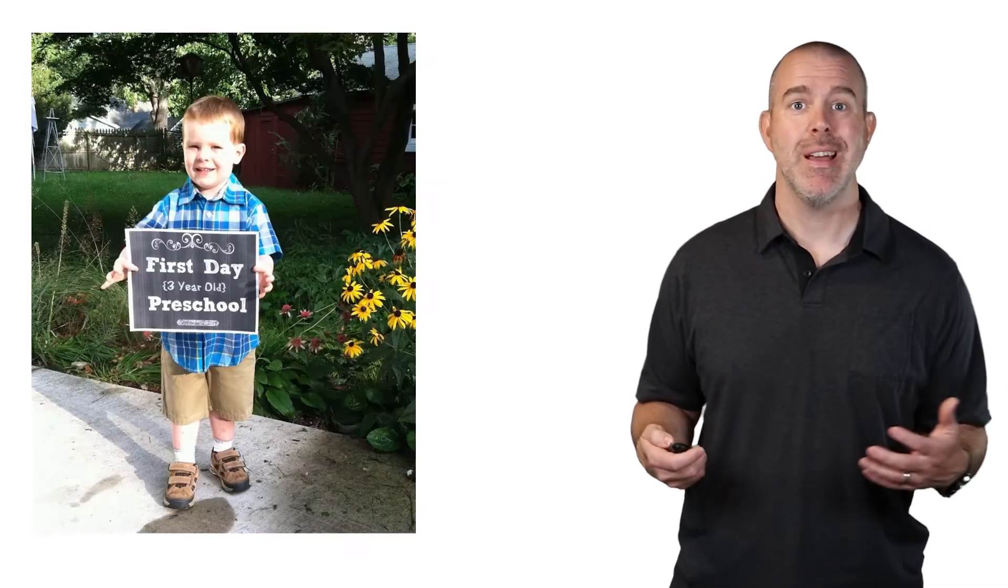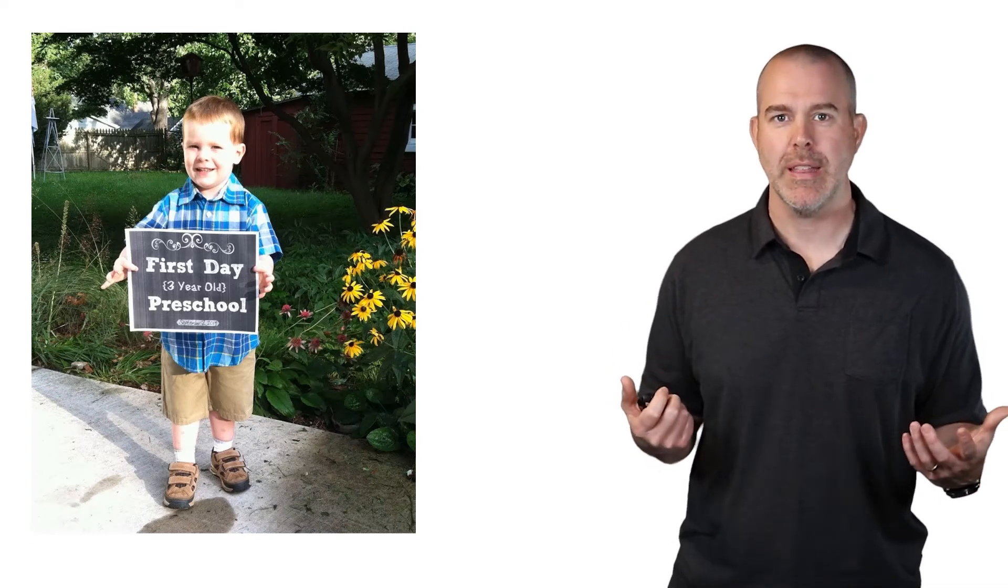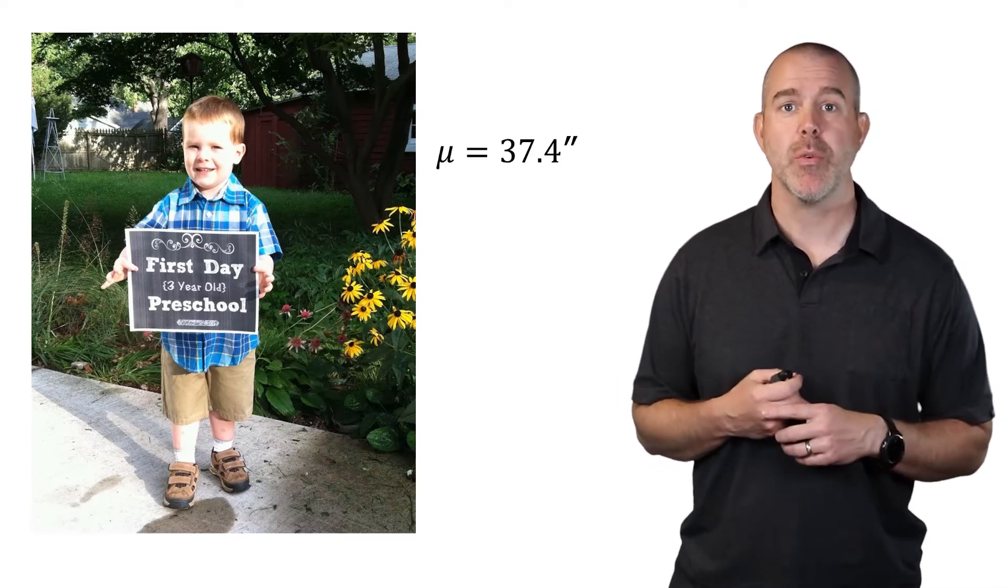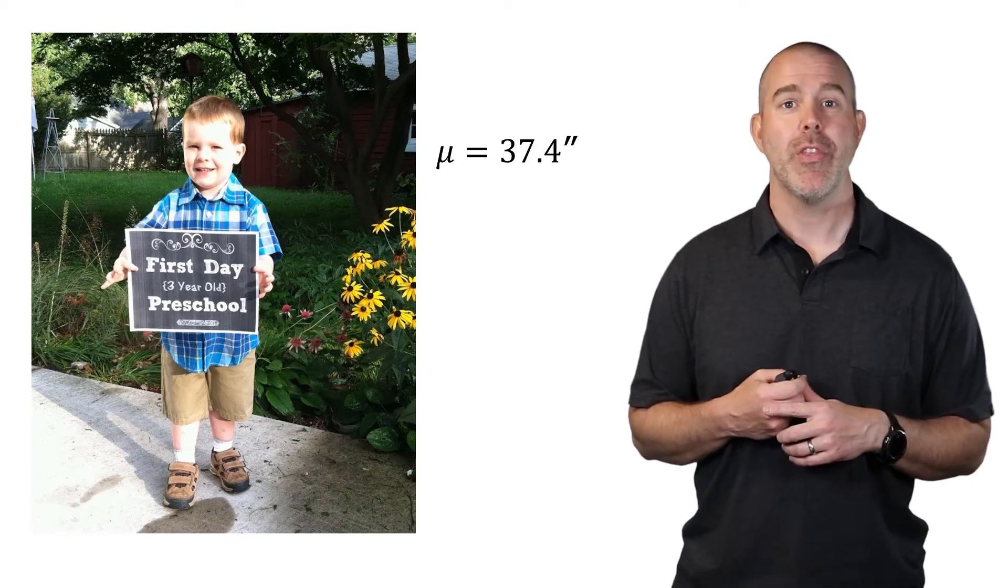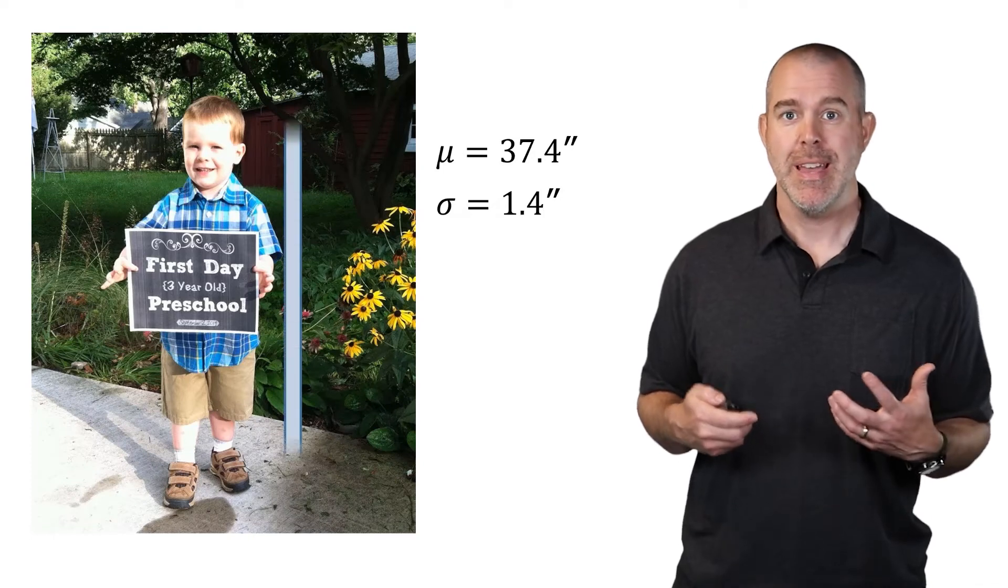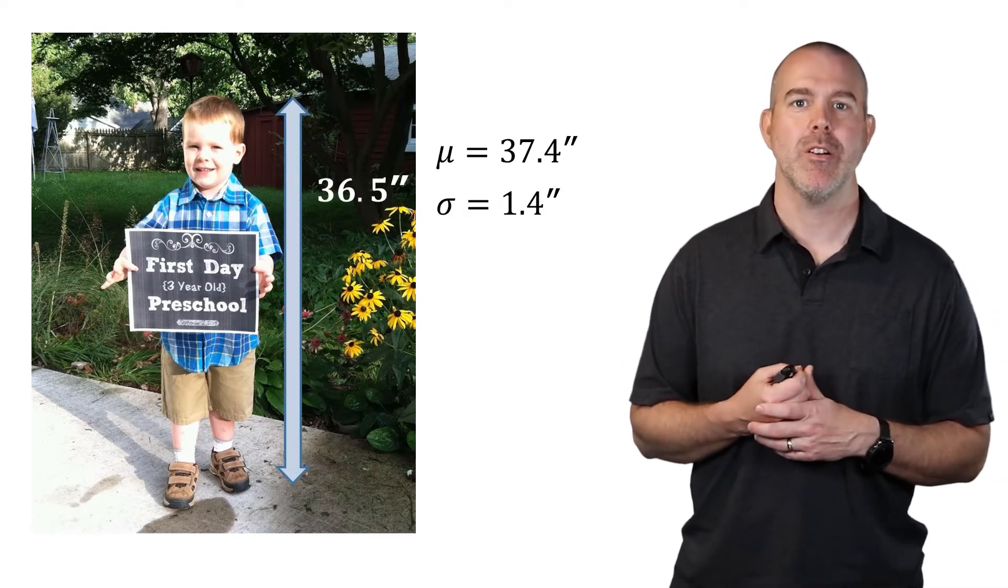Let's finish with an example. I've got a picture here of my son, my youngest son. He was three at this time. The mean height of three-year-old boys is about 37.4 inches with a standard deviation of 1.4 inches. His height at this point was about 36 and a half inches. I looked up his medical records actually.